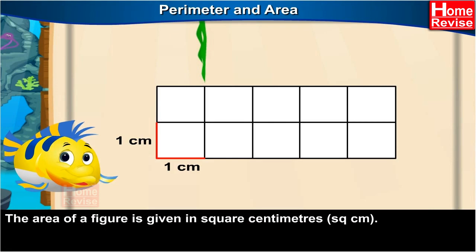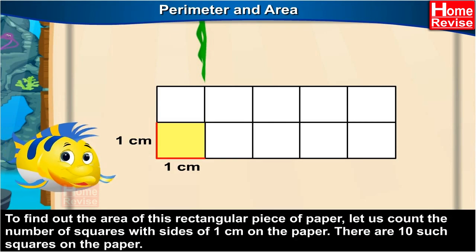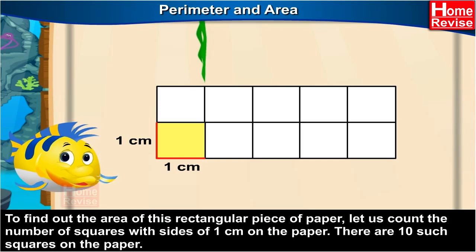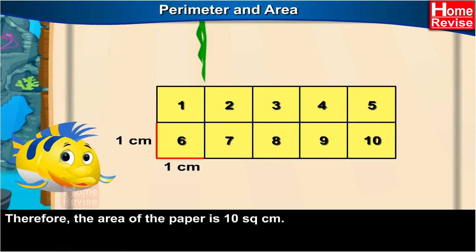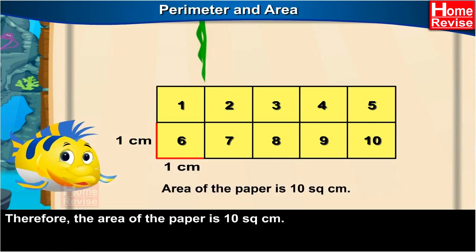The area of a figure is given in square centimeters. To find out the area of this rectangular piece of paper, let us count the number of squares with sides of 1 cm on the paper. There are 10 such squares on the paper. Therefore, the area of the paper is 10 square centimeters.